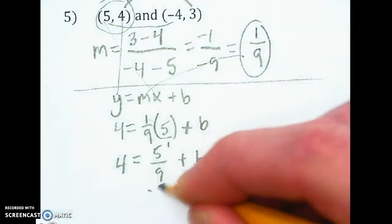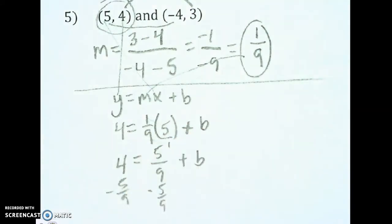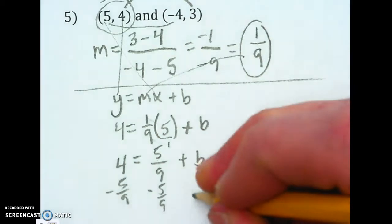Alright, we need to subtract 5 ninths to the other side. Subtracting 5 ninths from both sides. This is going to get us b.